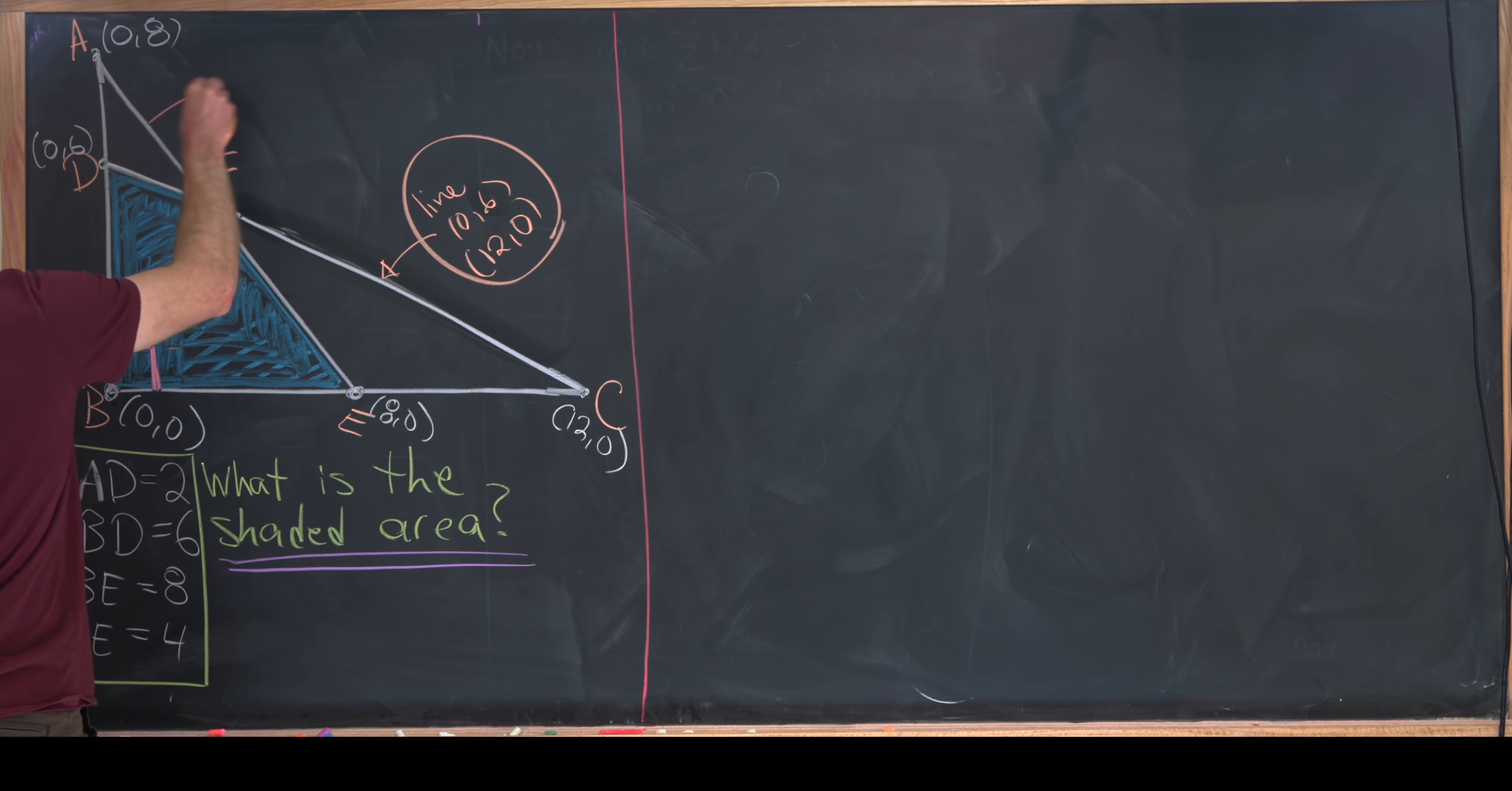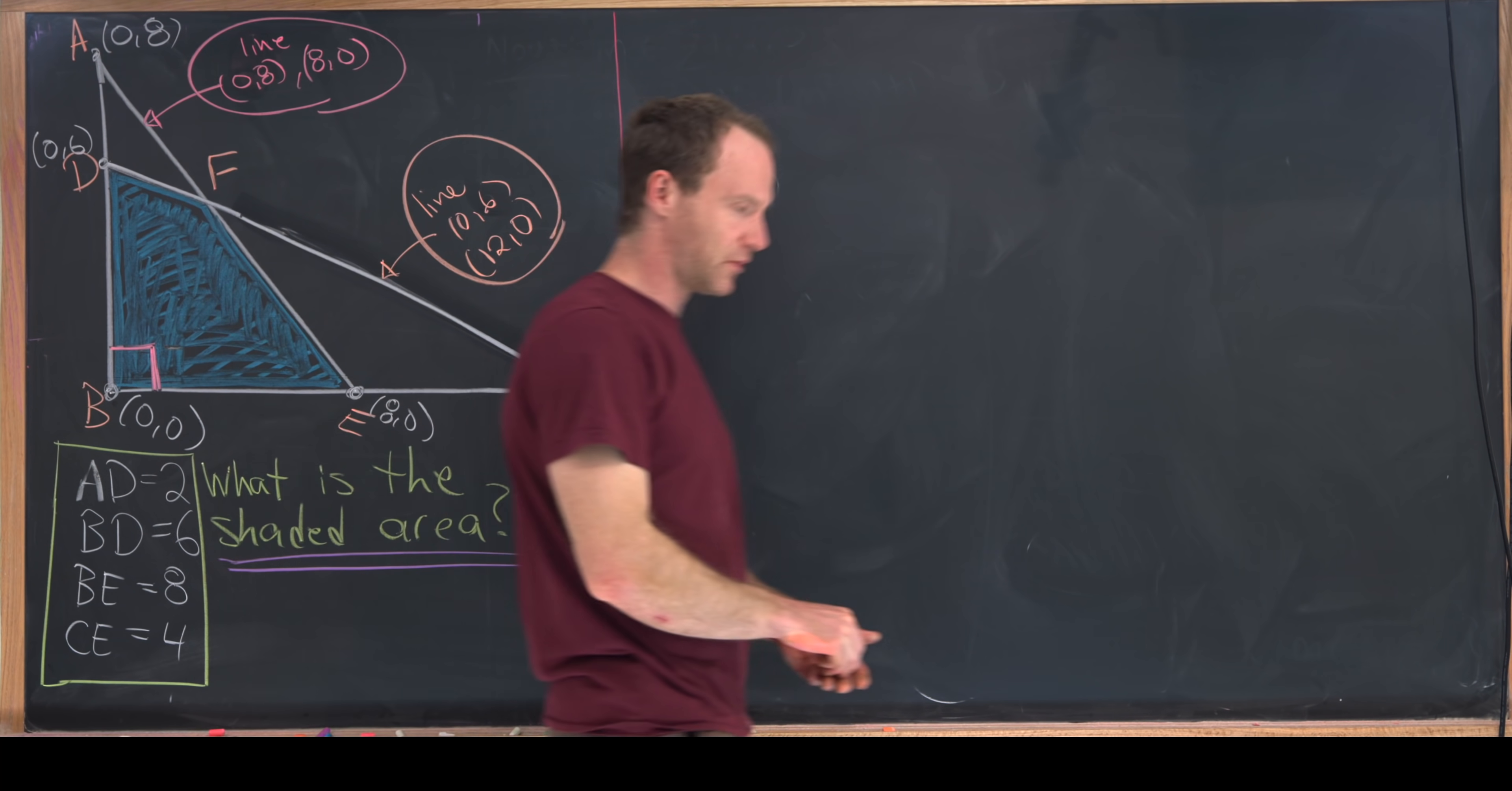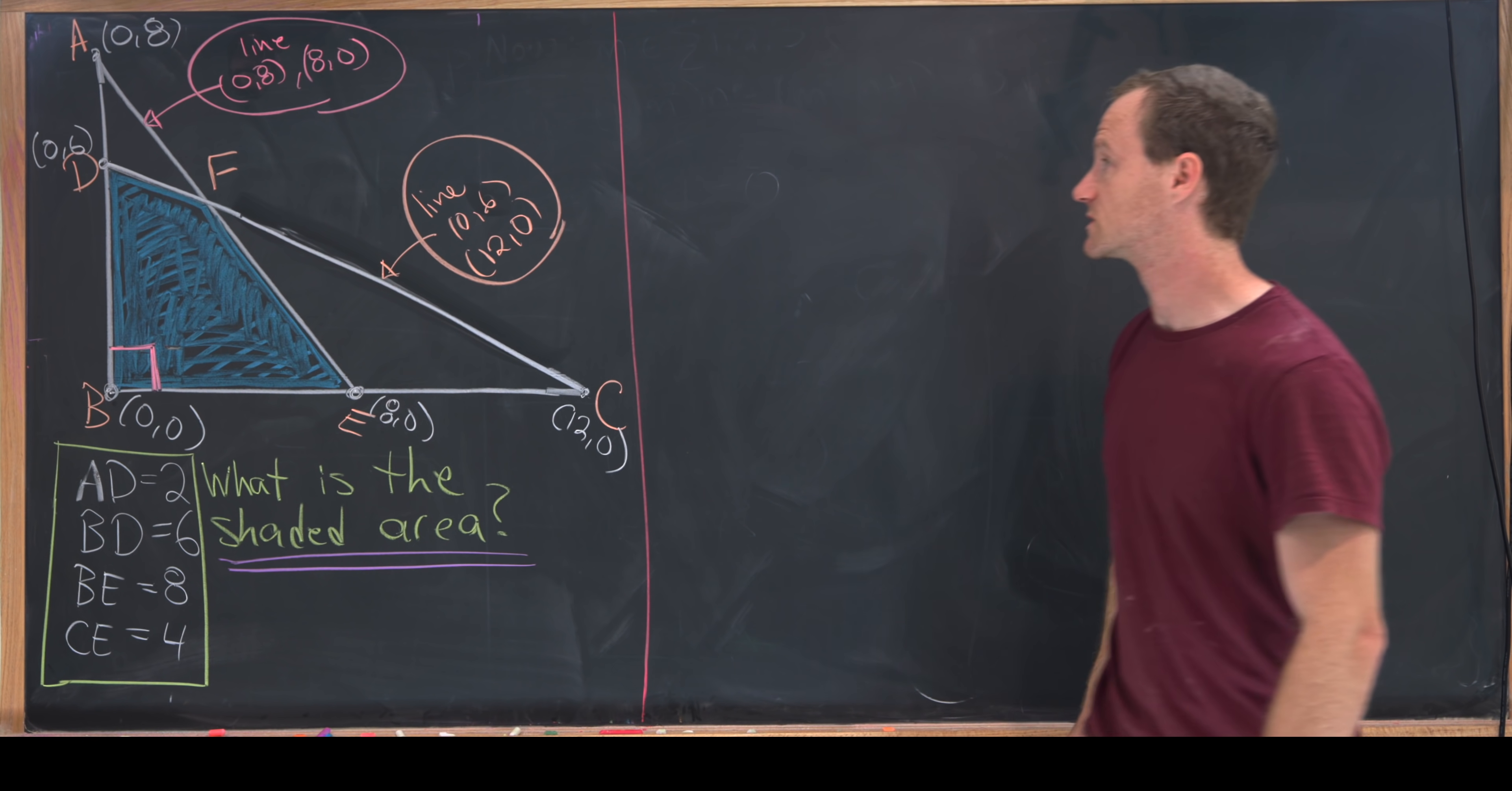Furthermore, this line here is a line containing the points (0, 8) and (8, 0). We can use standard point-slope form in order to find the equations of those lines.